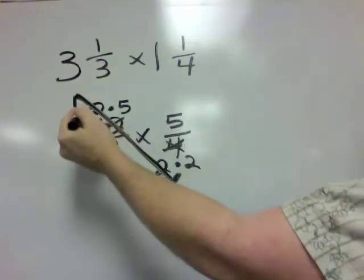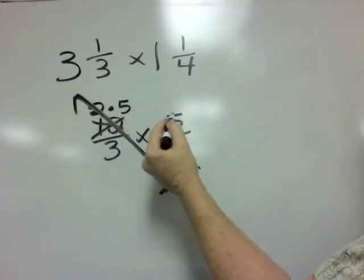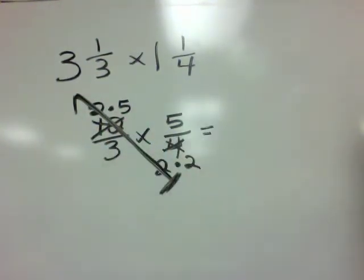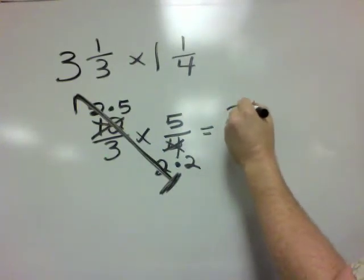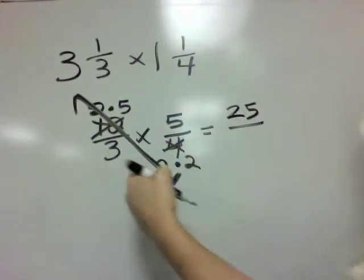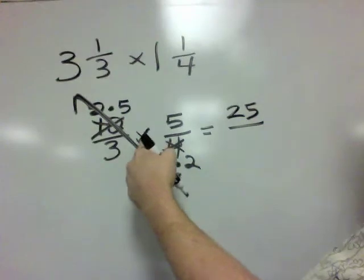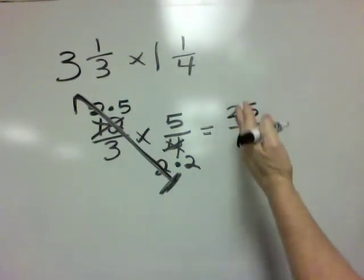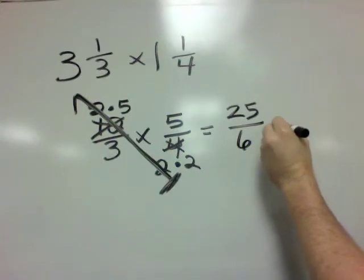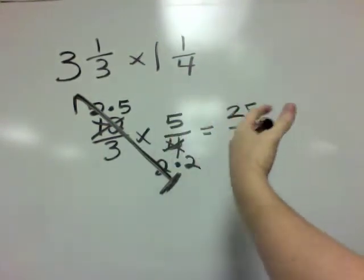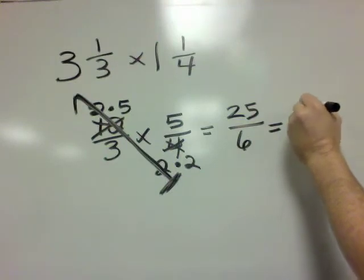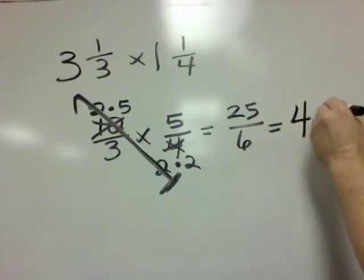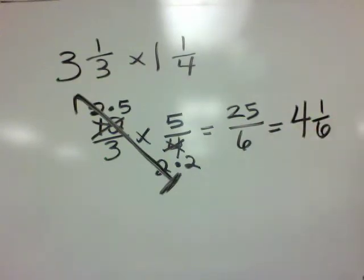So what we're left with is 1 times 5 times 5 in the numerator, which is equal to 25. And in the denominator we're left with 3 times 1 times 2, which is 6. And that's an improper fraction. So in this topic it's typically polite to change it into a mixed number. So we get 4 and 1 sixth as our final answer.